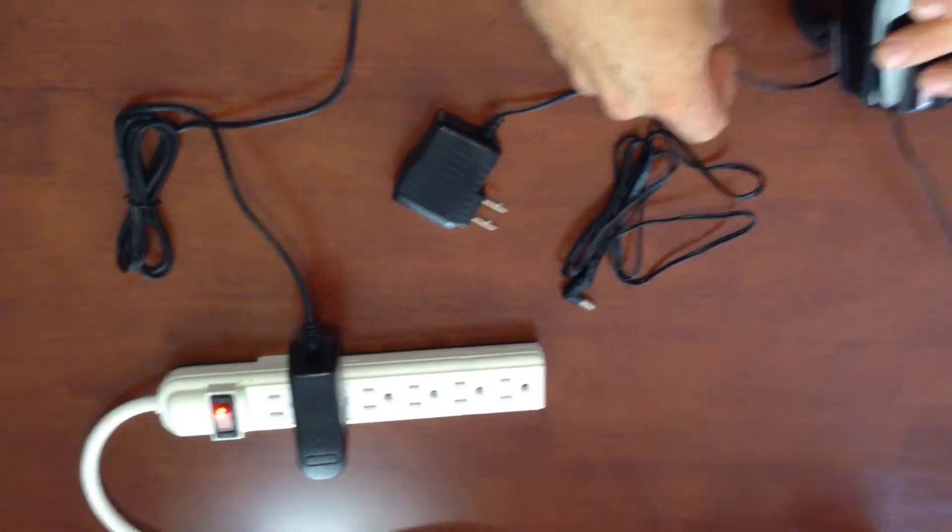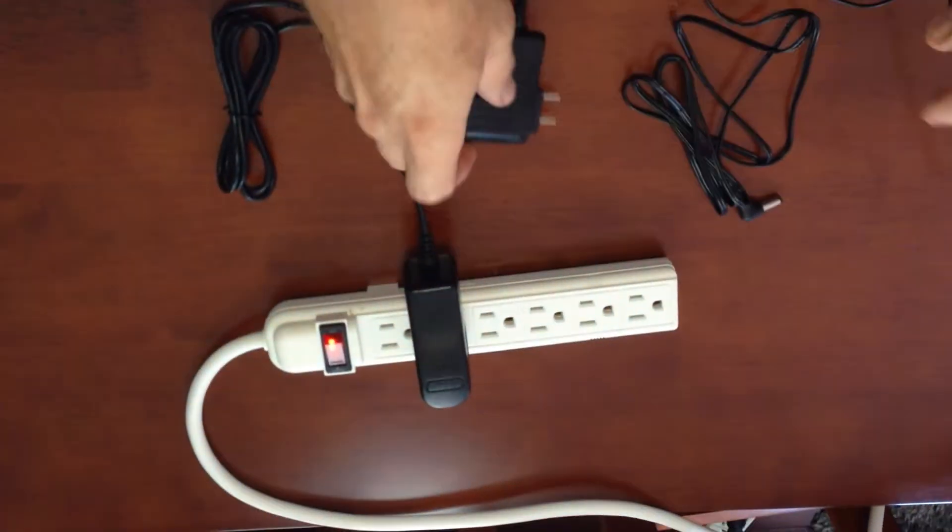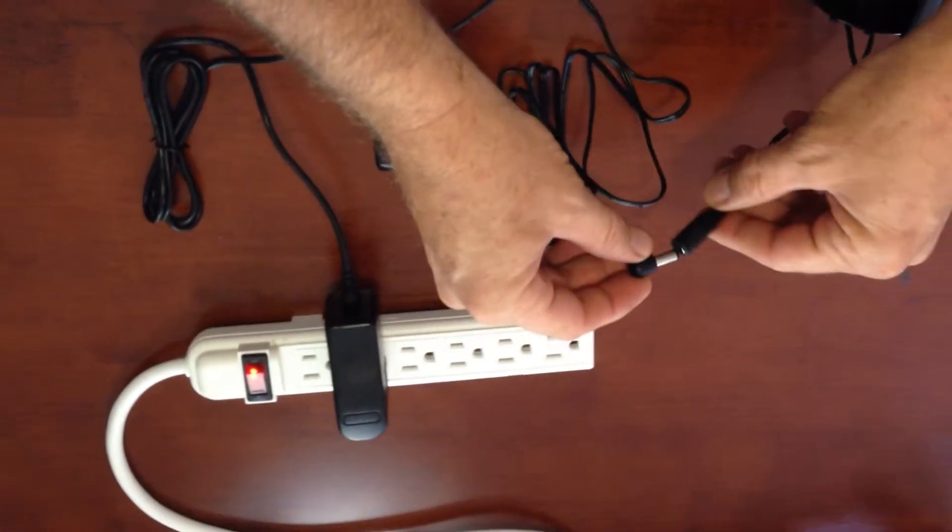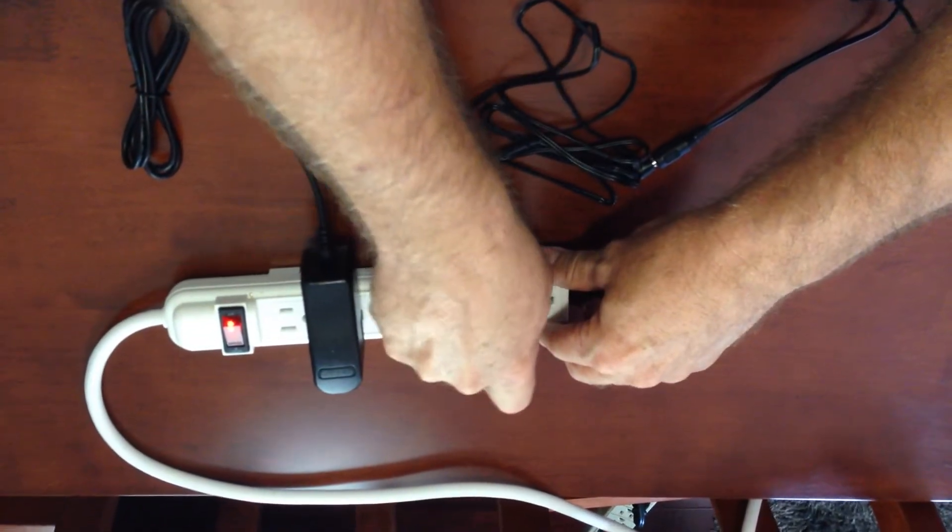Now we have to hook up the siren. This is your 9 volt test cord. We're going to hook this up first to the siren and then we will plug it in. And you'll hear it beep.